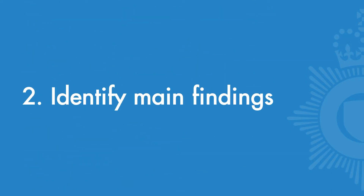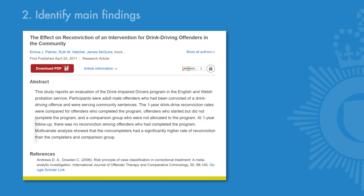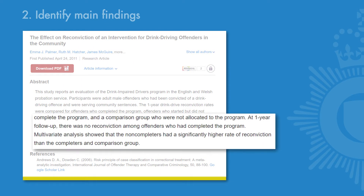Once you've found out what the researchers are trying to measure, you want to know what the main findings of the study are. This would be found in the abstract, which is a summary of the study at the beginning of the article. The third step is to assess the quality of the research by looking at the study design, the sample, and the methods.